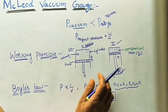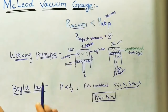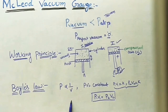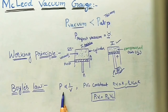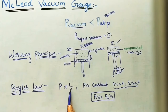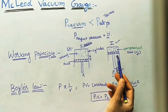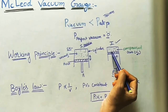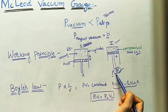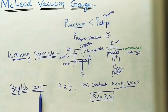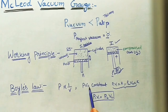So we can say this McLeod vacuum gauge follows Boyle's law. Boyle's law states that the absolute pressure of a given mass of a perfect gas varies inversely proportional to the volume. If you apply more pressure, volume will be less — it is inversely proportional. By removing the proportionality sign, PV is equal to some constant.